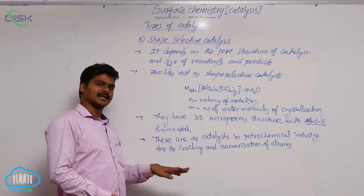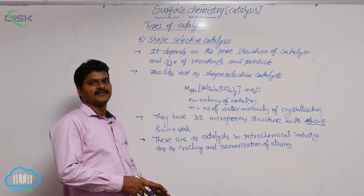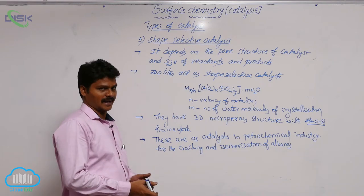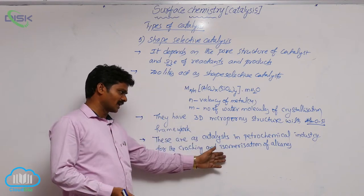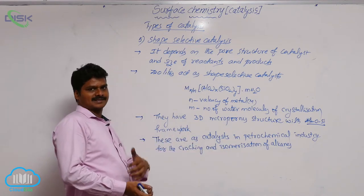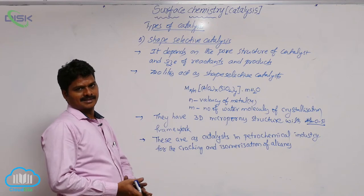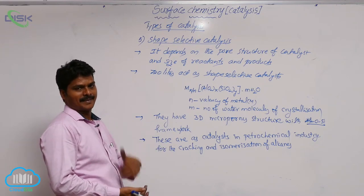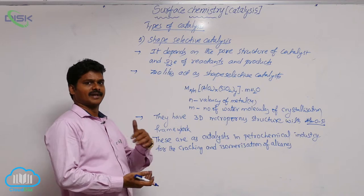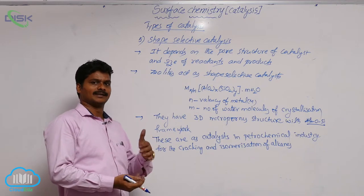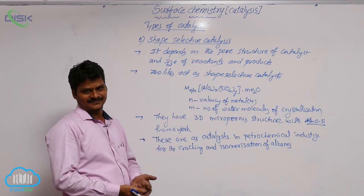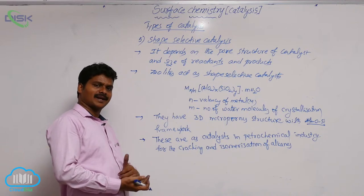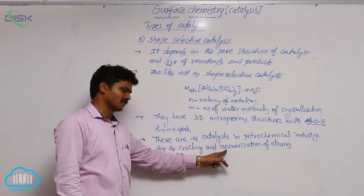Cracking means breaking of hydrocarbons by heating. Isomerization means one isomer is converted into another isomer. For example, if we take n-pentane, it is converted into either isopentane or neopentane. Such a conversion of one isomer into another is called isomerization.